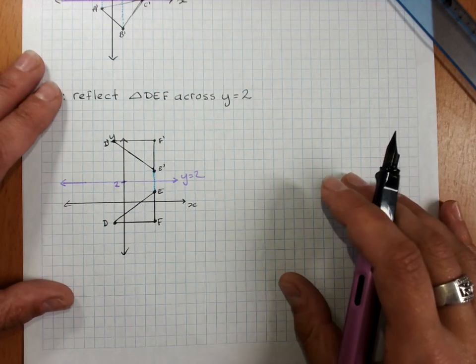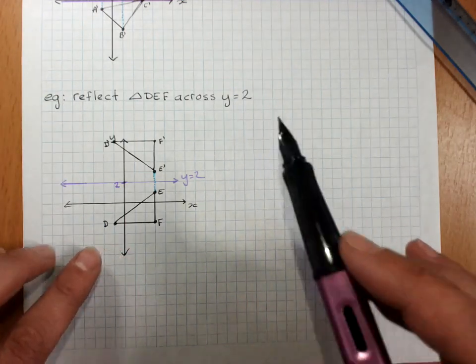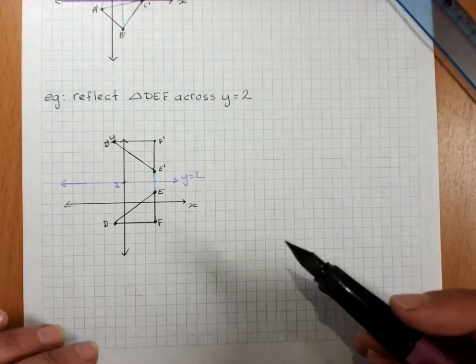Every so often they'll tell you to reflect our shape across an axis that goes through the middle of the shape.